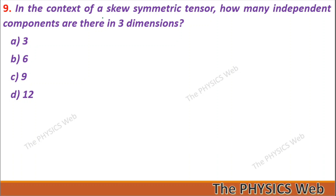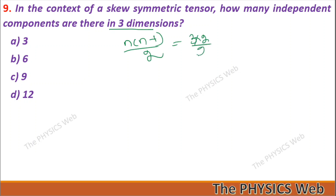Question 9: In the context of a skew-symmetric tensor, how many independent components are there in three dimensions? For a skew-symmetric tensor the number of independent components is n(n-1)/2. So 3×2/2 = 3 — so A is your correct option.